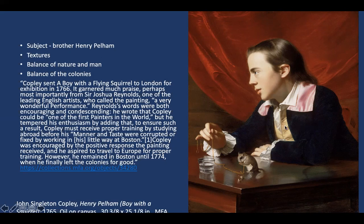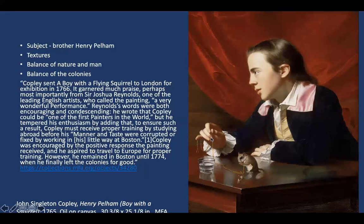The painting is interesting compositionally: there is almost a pyramidal composition evoking the Italian Renaissance, but the open form is more reminiscent of Baroque work, where we can tell the scene extends beyond the canvas. Some scholars have interpreted this as a balance or need for balance between man and nature — Henry carefully balances the gold chain while the squirrel does the same — and it might also reflect the balance of the colonies.